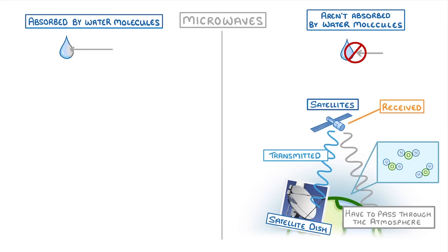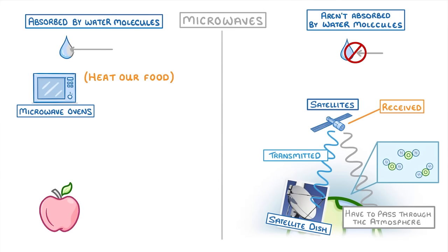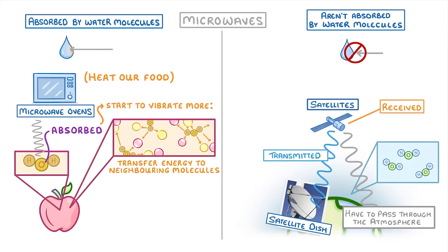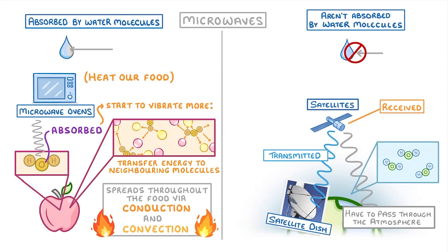The second type of microwaves are used in microwave ovens, where they help us to heat up our food. Because most of the food that we eat contains lots of water molecules, when microwaves are fired at our food, the energy from those waves gets absorbed by all the water molecules. As the water molecules start to vibrate more with all that new energy, they transfer some of the energy to neighboring molecules, so that it spreads throughout the food by conduction or convection. This is why foods that contain more water tend to heat up more quickly in the microwave.